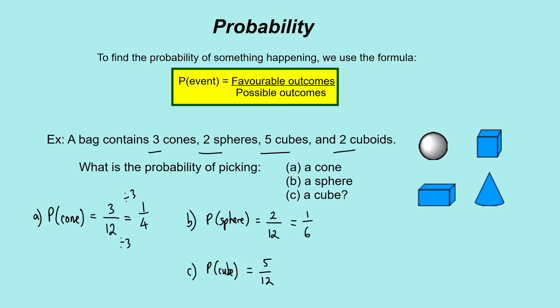That's your basic example of how probability works, and you can use that to compare different probabilities. If we look at the probabilities, the probability of the cone was 3/12, sphere was 2/12, and cube was 5/12. The higher that number, the more likely you are to pick that, to have that outcome happen. So 5/12 is the most likely to happen.